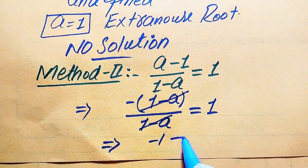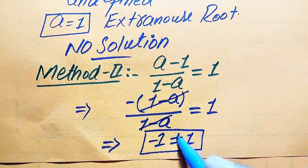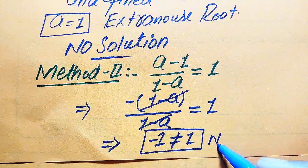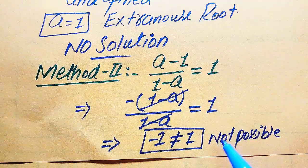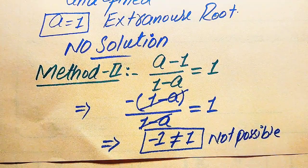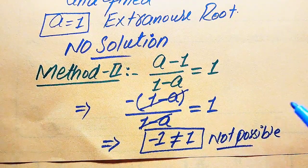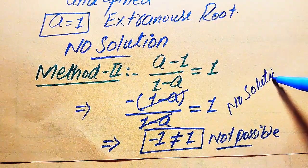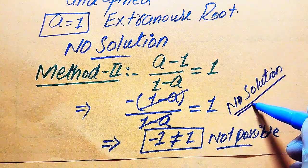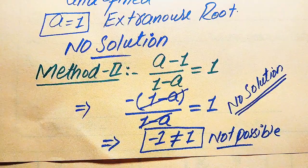The (1 minus a) terms cancel, leaving minus 1 equals 1. Since both sides are not equal, this is an impossible case. This means we cannot get any value of a that satisfies the equation, so this question has no solution. Thank you for watching this video — please subscribe to my channel for more videos.